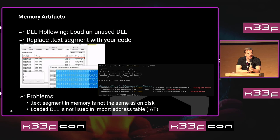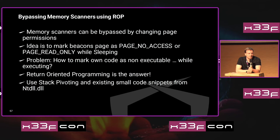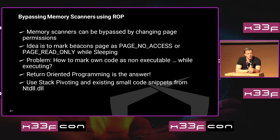The next try could be DLL hollowing, where we load an unused DLL into the remote process and replace the text segment with our own code. But Moneta complains again for two reasons: first, it asks why this process loaded this DLL when it's not declared in the PEB anywhere; second, the text segment of the DLL on disk is not the same as the text segment of the DLL in memory. There are a bunch of ways to bypass memory scanners, and they basically all boil down to changing the page permissions of the beacon while it's sleeping, because memory scanners only check for executable memory regions.